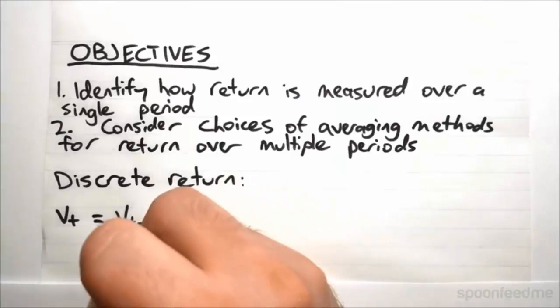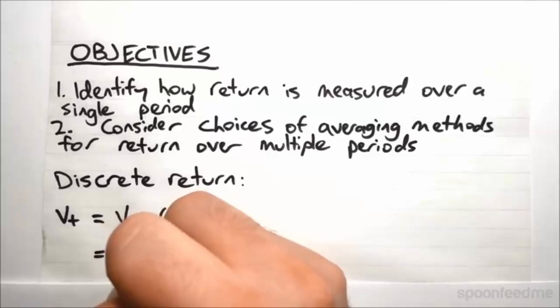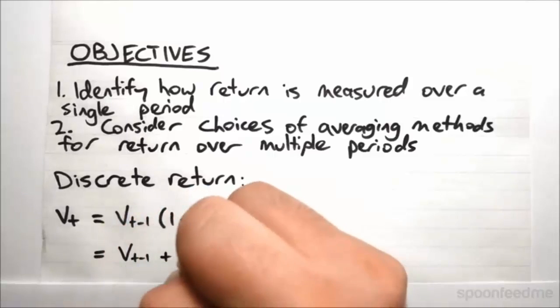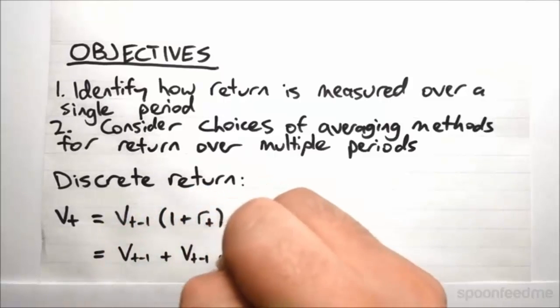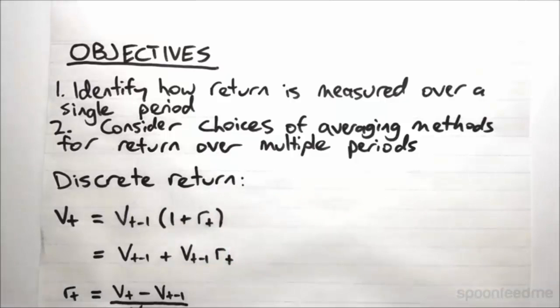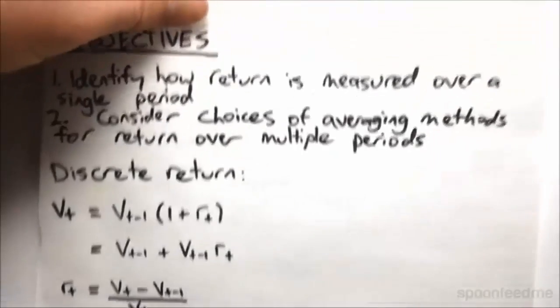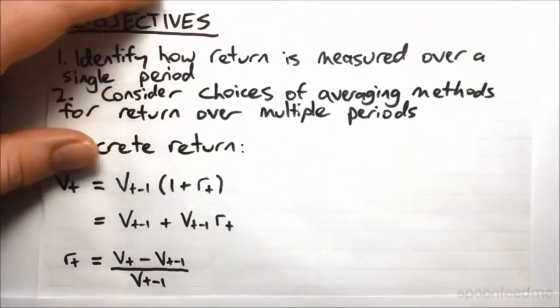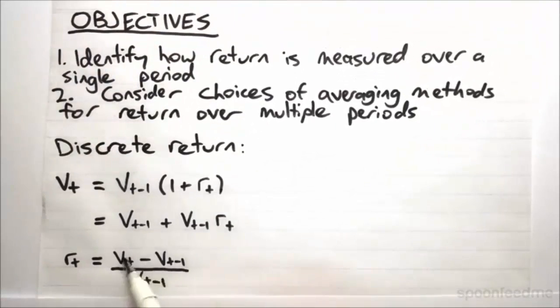So we just expand this out and you get Vt-1 plus Vt-1 rt. And if you just rearrange that, you get that the rate is equal to this fraction. So it's the difference between the values at each time period divided by the initial value to get it in percentage terms. This is our most simple way of measuring return over one period.